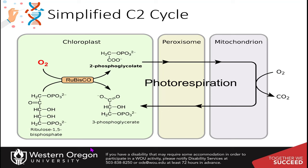To recover the 3-phosphoglycerate, this 2-phosphoglycolate has to leave the chloroplast, go into the peroxisome where it gets converted into a different product, leave the peroxisome, go on into the mitochondrion, and more enzymatic reactions occur to recover the 3-phosphoglycerate.